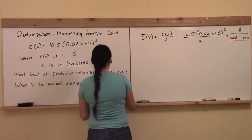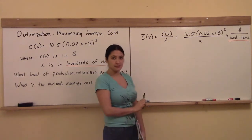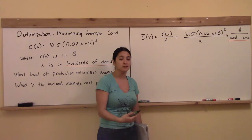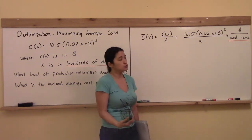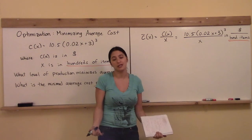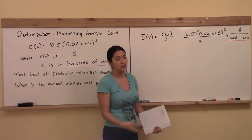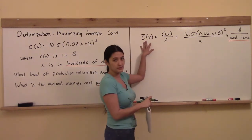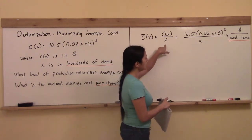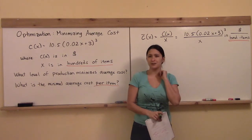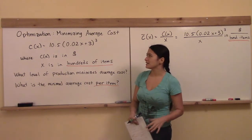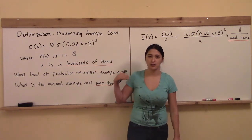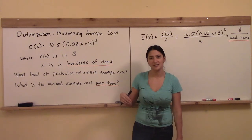By now I would definitely expect you to have in mind that average cost is total cost divided by number of items — just like how profit equals revenue minus cost. So we're going to form the c-bar function, which represents average cost, by taking the cost function and dividing it by x. Usually this is a lot easier because they give me a polynomial and I just go term by term, dividing each term by x.